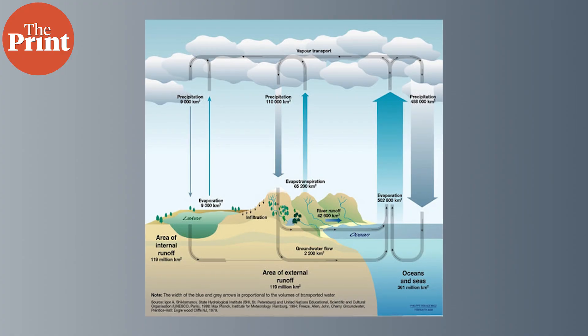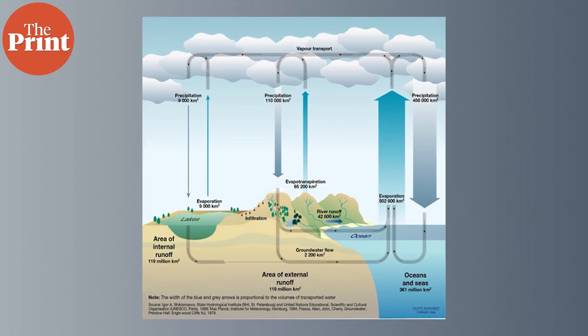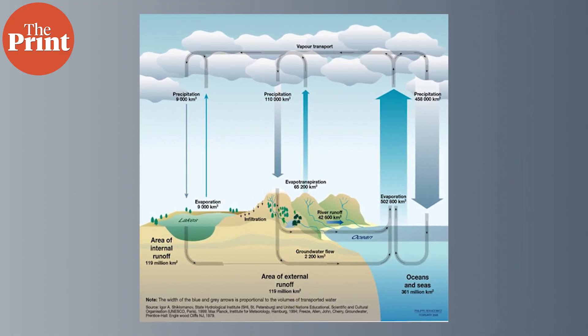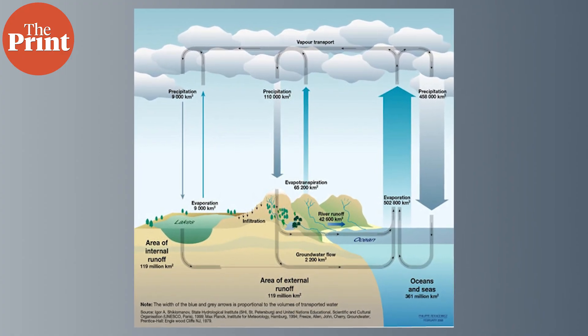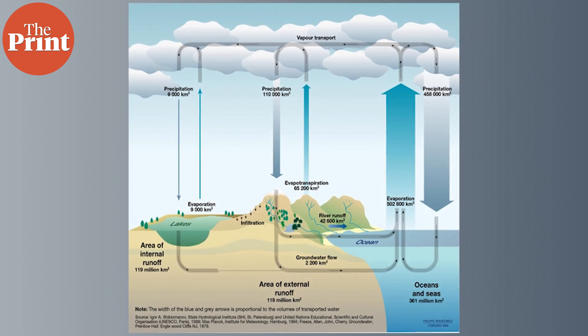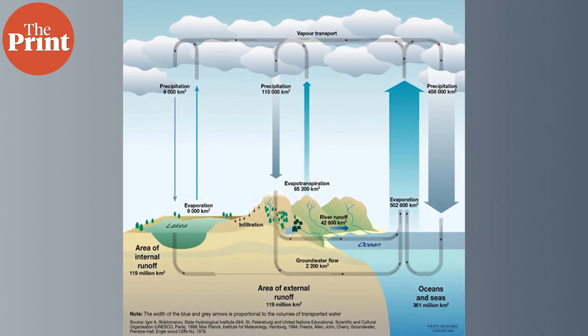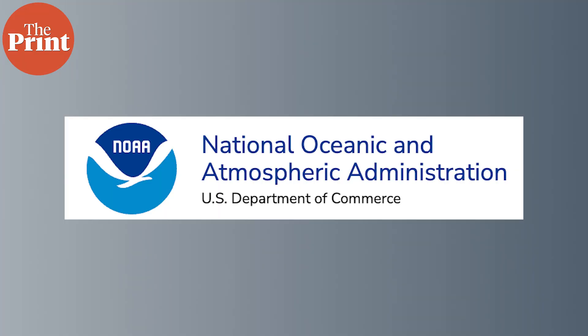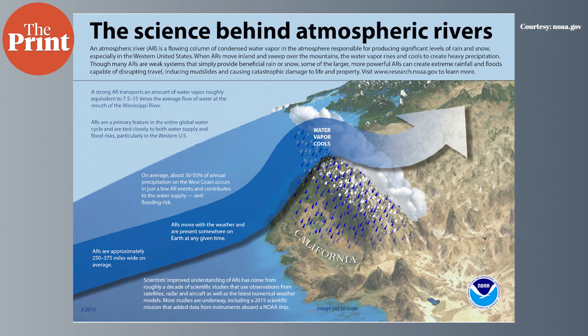Atmospheric rivers are narrow stretches in the atmosphere that carry water vapour from the tropics to the poles. They are called rivers in the sky by the National Ocean and Atmospheric Administration of the US government, because of the huge size and the huge amount of water vapour that they carry.